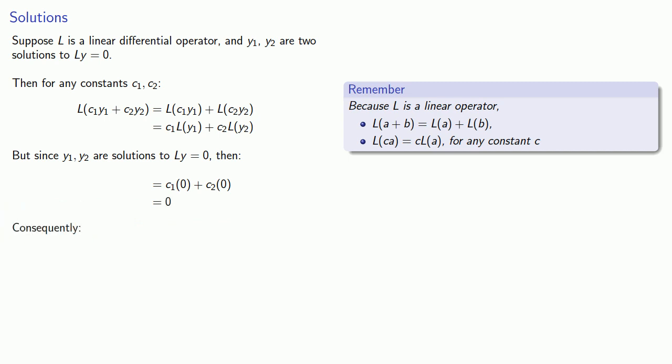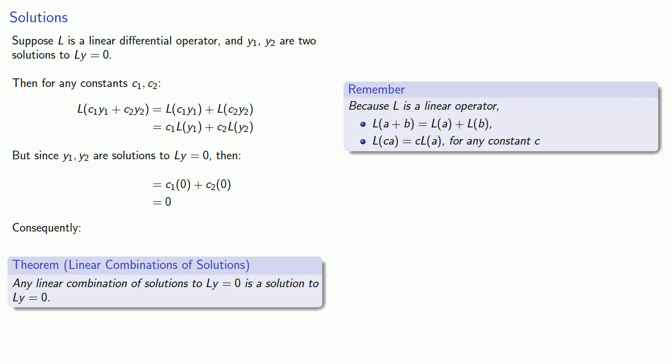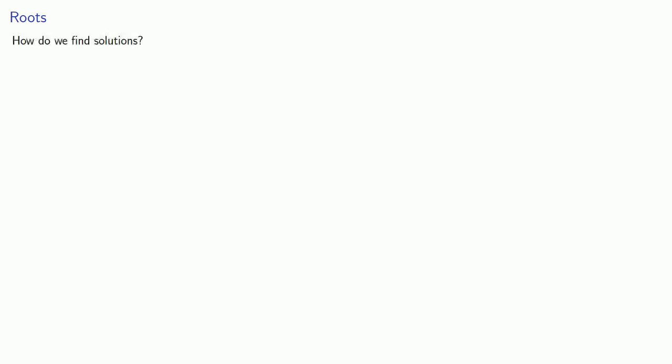Consequently, any linear combination of solutions to LY equals zero is also a solution to LY equals zero. In other words, linear combinations of solutions will also give you a solution. That's amazingly useful — once we have a solution, we can find more. But how do we find solutions in the first place? Let's consider a few simple cases.